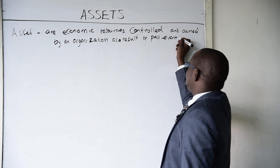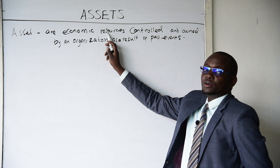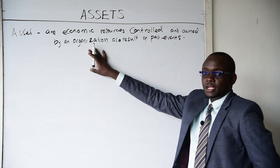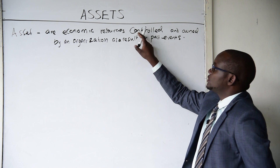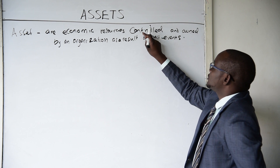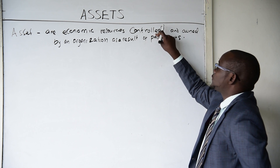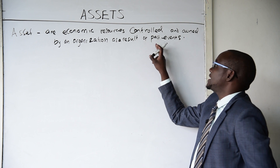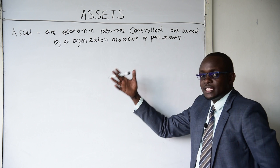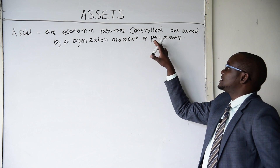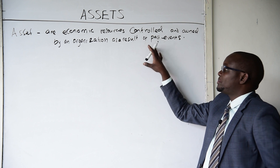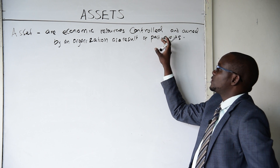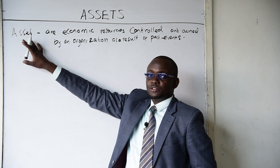Assets are economic resources because they are items of value. They must be owned and controlled by an organization — these assets must belong to an organization and must also be used by the organization in terms of control. These assets do not just occur in an organization; they have been purchased or donated to the organization. That's why we say assets result from past events — something must have happened in the past for these assets to be there.